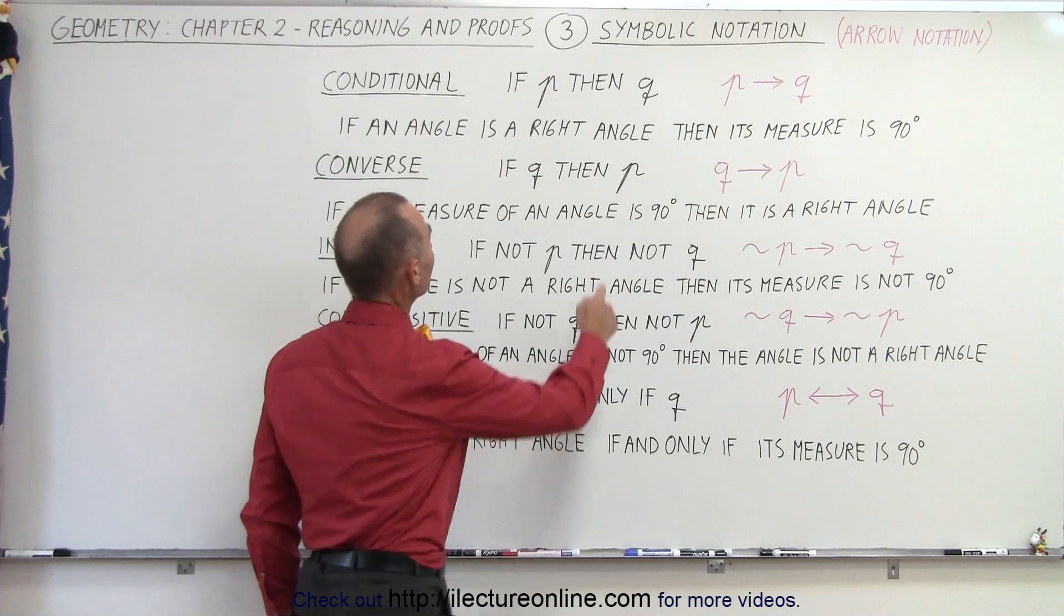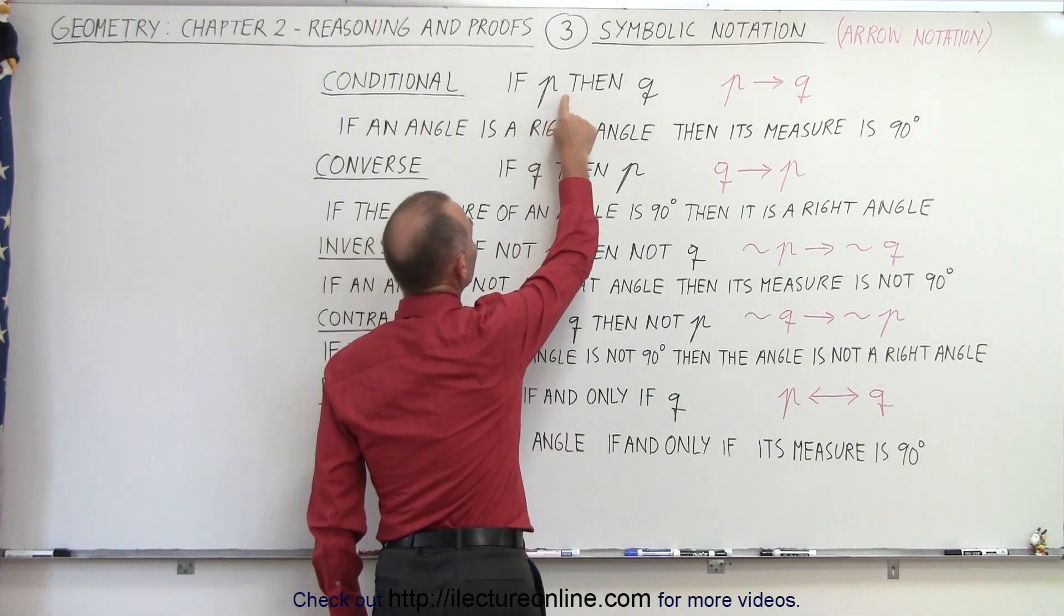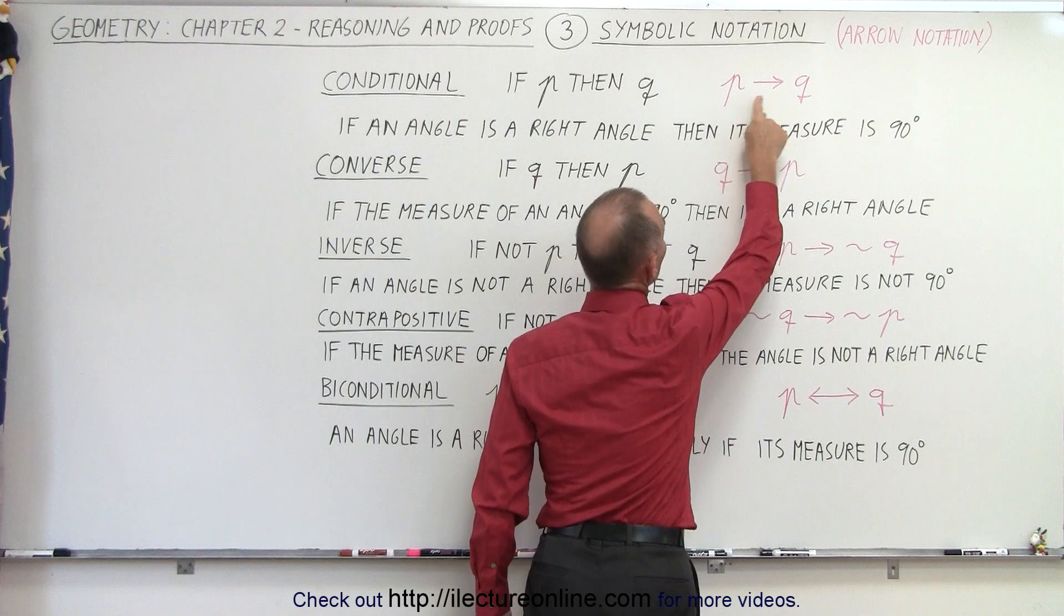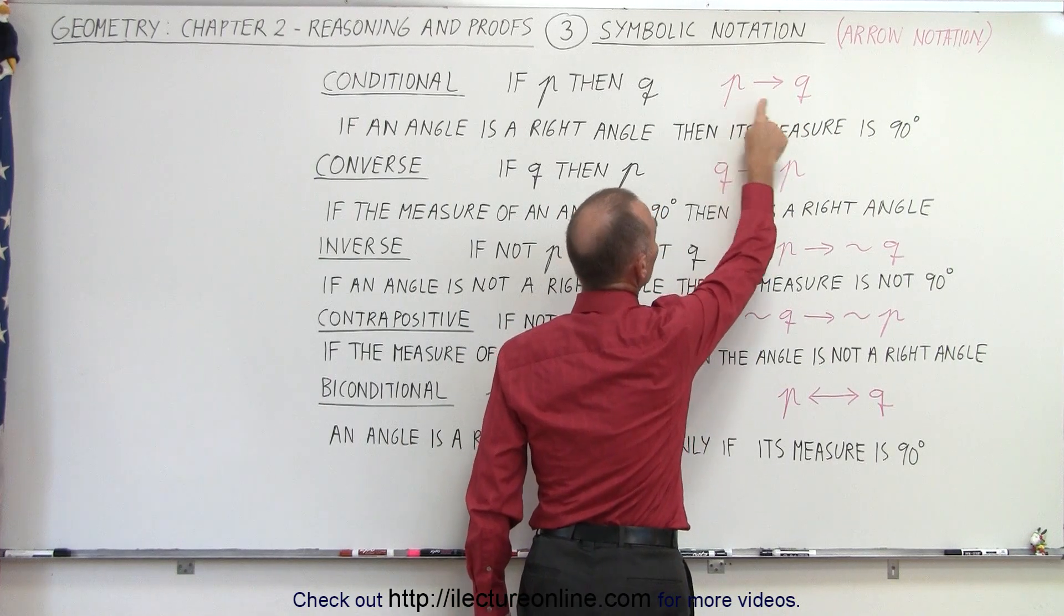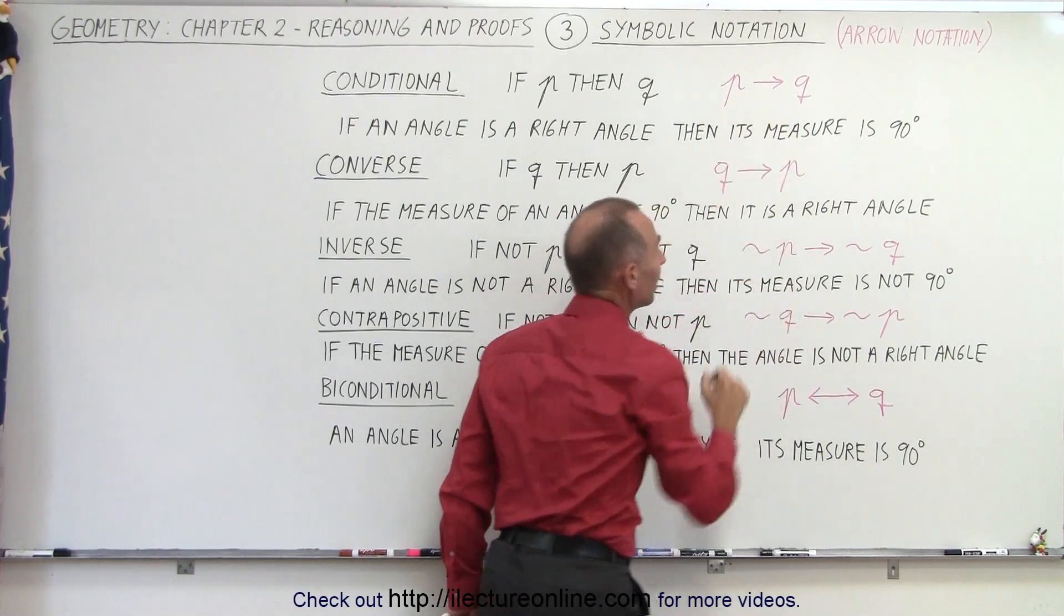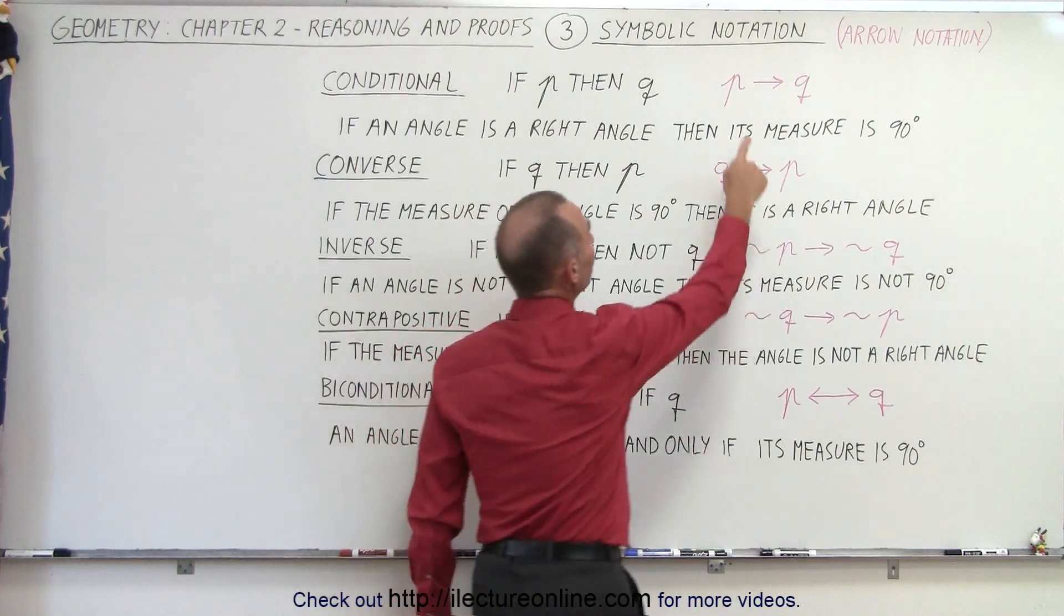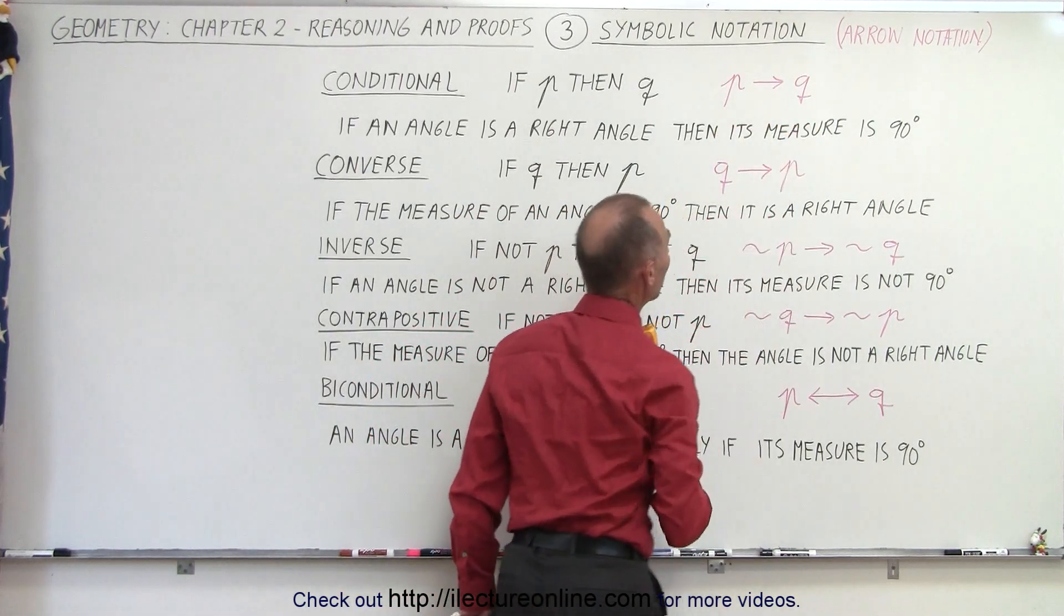Here the statement if P is true then Q is true can be represented by this symbolism where we have P and Q with an arrow from P to Q. This simply means if P is true then Q must be true as well.